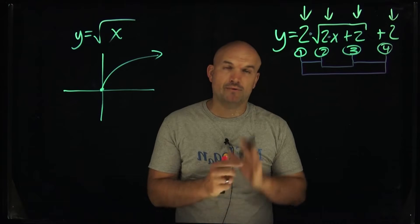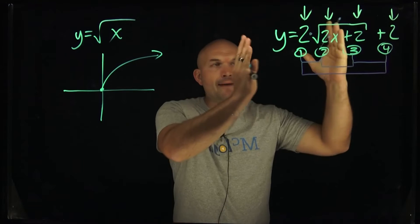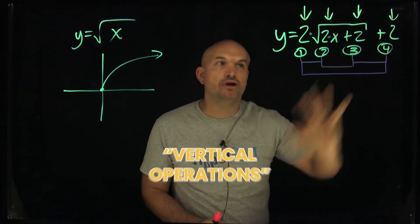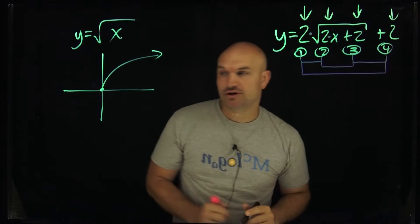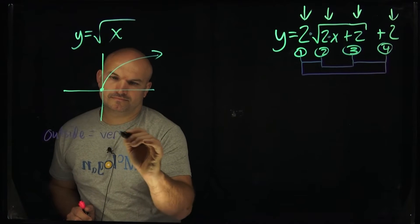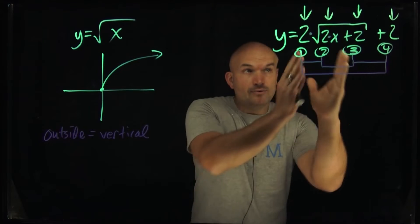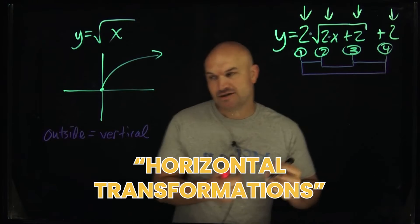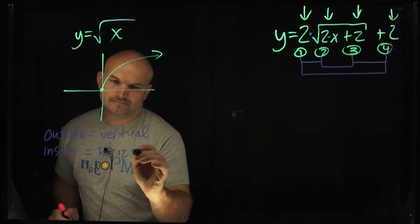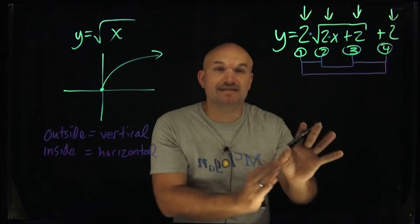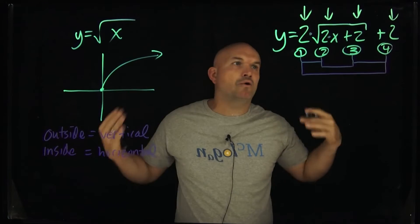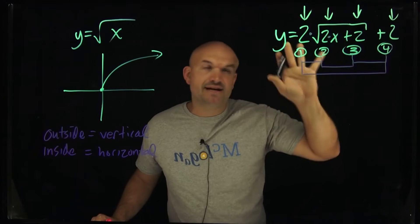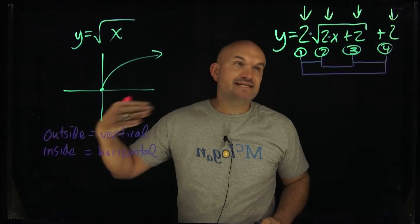Here's how to simplify this: when you have operations that are outside of the function, those are going to be what we call vertical operations — outside is vertical. Then we have inside. If outside is vertical, inside is going to be your horizontal transformations. And it doesn't matter if it's the square root, quadratic, or logarithmic — this works for all functions. We're just focusing here on the square root function.